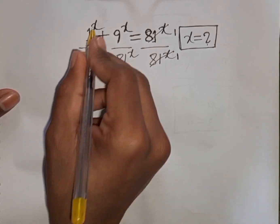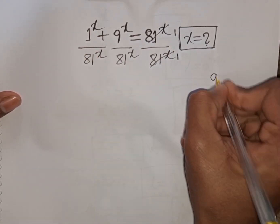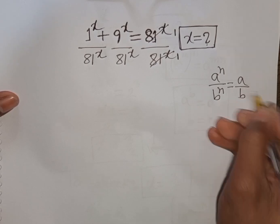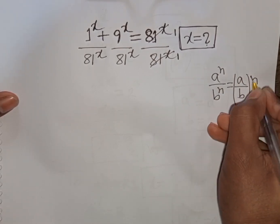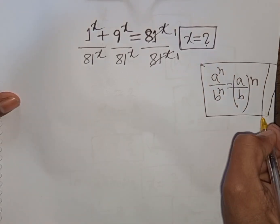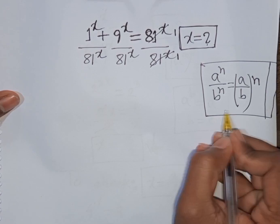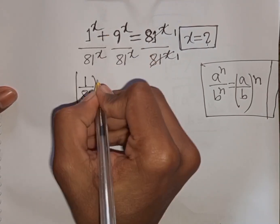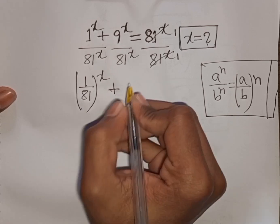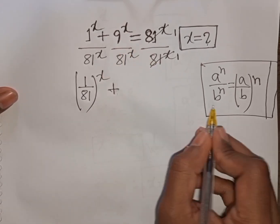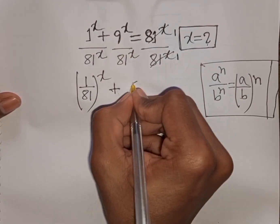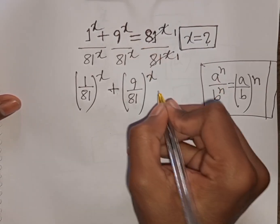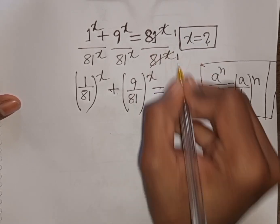Now we see the terms have the same power x but different bases. According to the formula, a power n over b power n is equal to (a over b) to the common power n — that means same power but different base. So we can write (1 over 81) power x plus (9 over 81) power x is equal to 1.